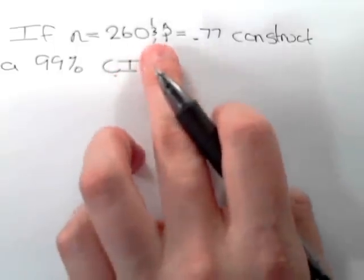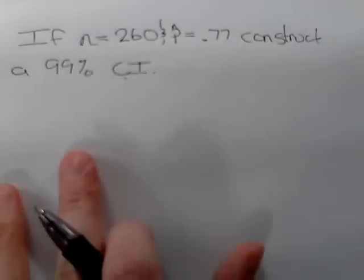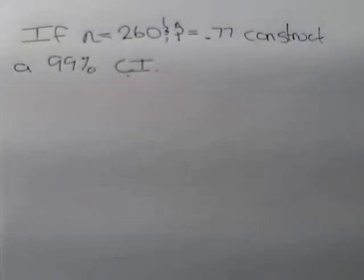If n is equal to 260 and p hat is 0.77, construct a 99% confidence interval.